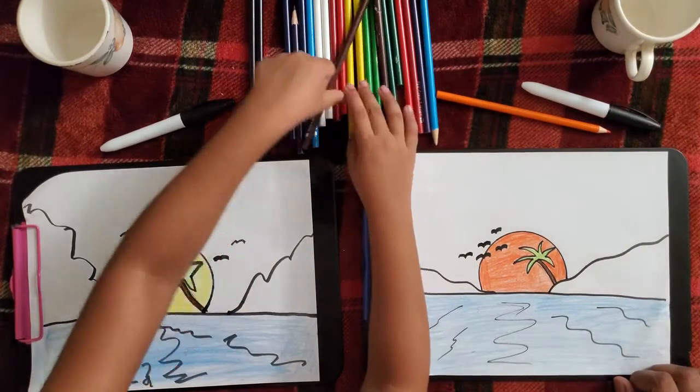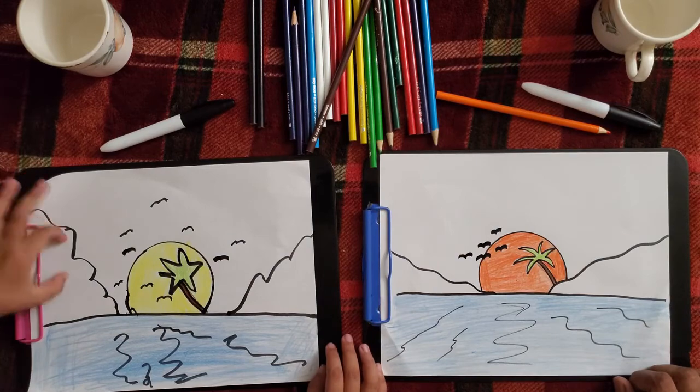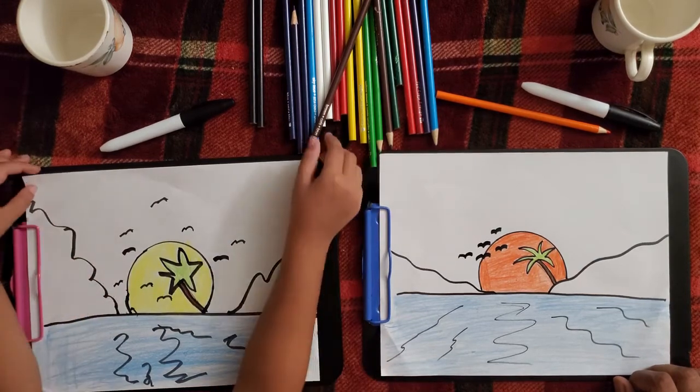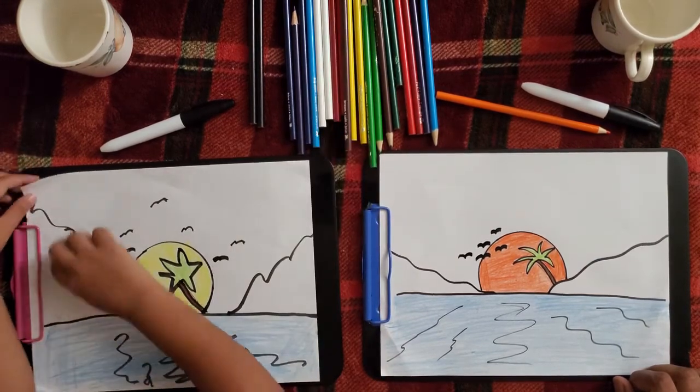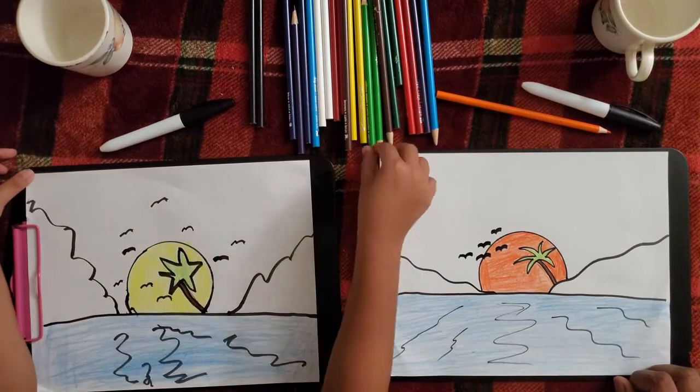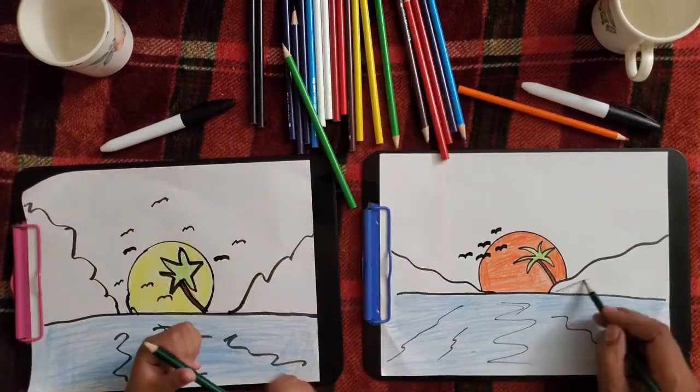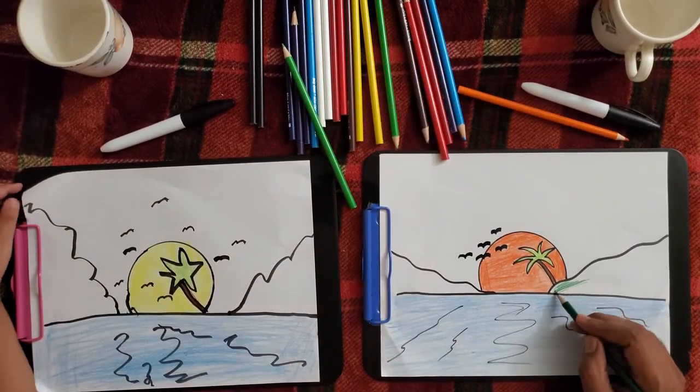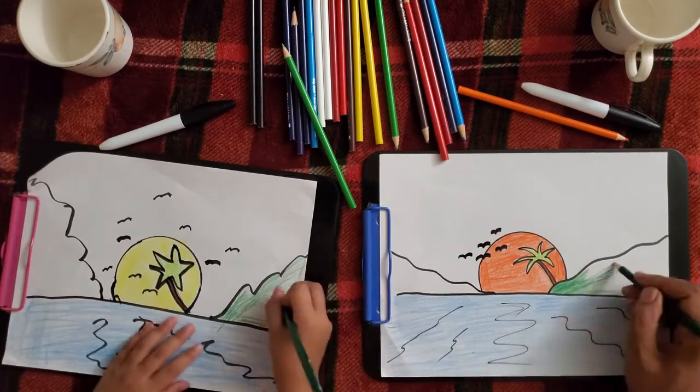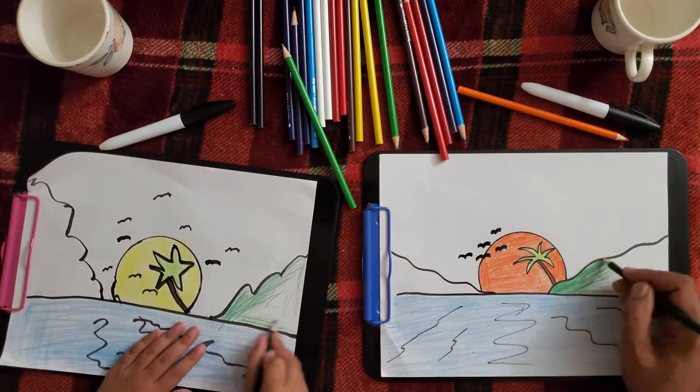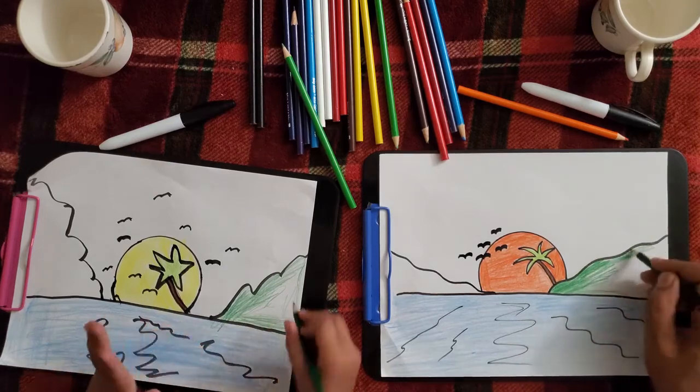I'm done. Now color the hills green. You can color them brown. Well, green is for the grass, brown is for the dirt. Keep coloring and drawing. See you next time, bye!